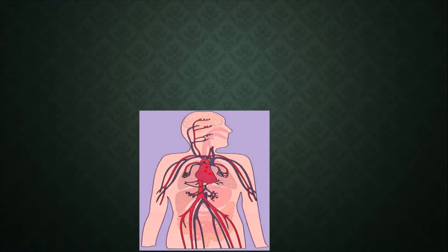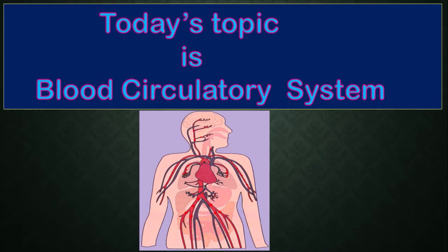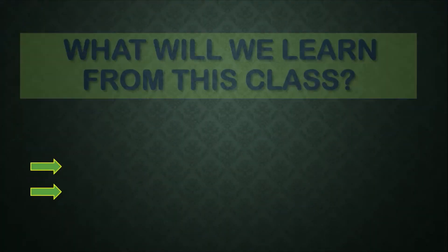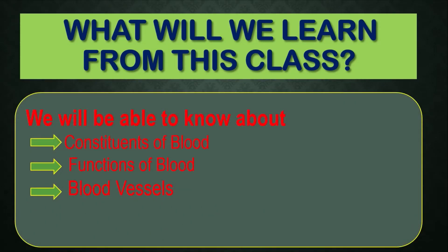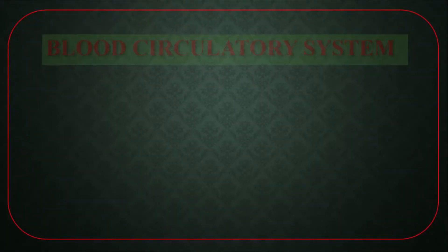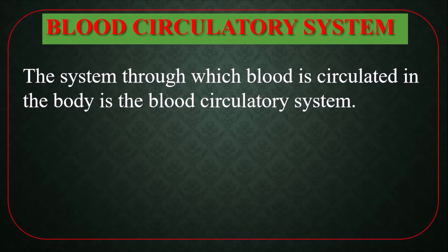From the picture, there is a picture of the human body which is related to supplying oxygen and nutrients to the total body, as well as collecting wastage from different parts of the body. Today's topic is the blood circulatory system. We will be able to learn about the constituents of blood, functions of blood, and blood vessels.